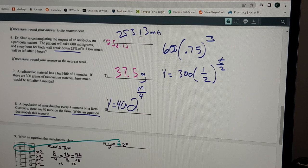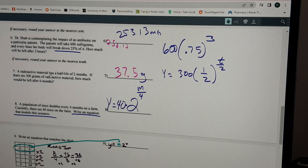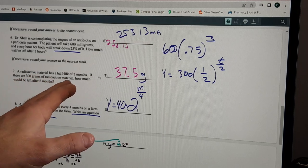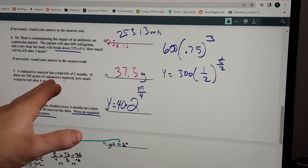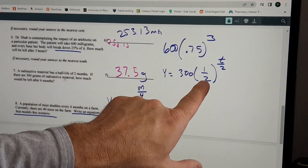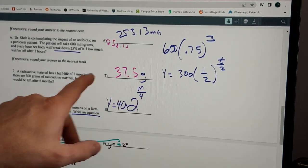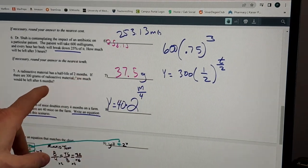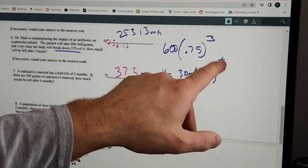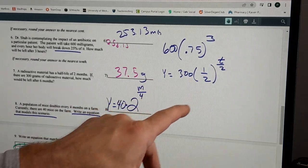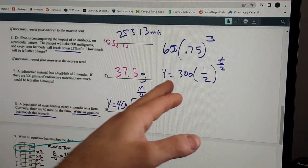For the half-life equation, there were 7, that means each time it compounds by a half you get 0.5 there, or one-half, and it's every two months. So in six months, you take 6 divided by 2, that's three times it gets one-half.